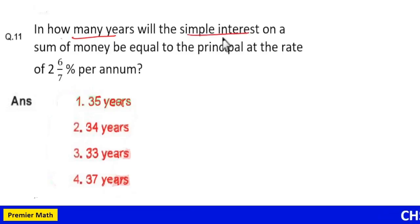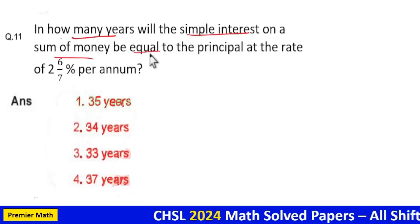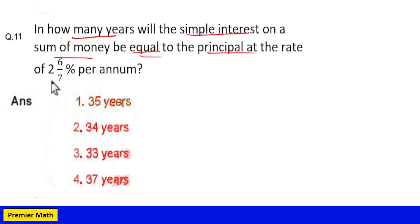In how many years will the simple interest on a sum of money be equal to the principal at the rate of 2 into 6 by 7 percentage per annum?